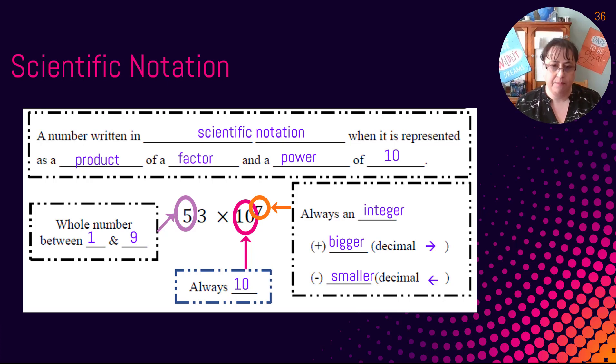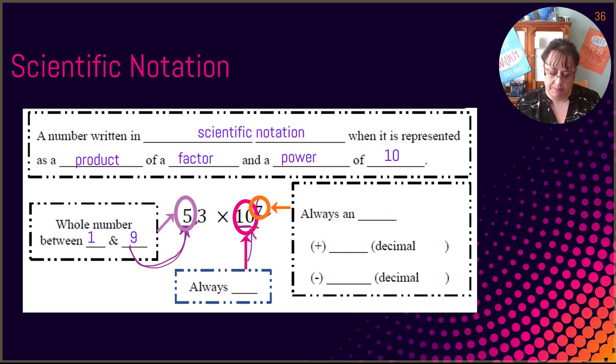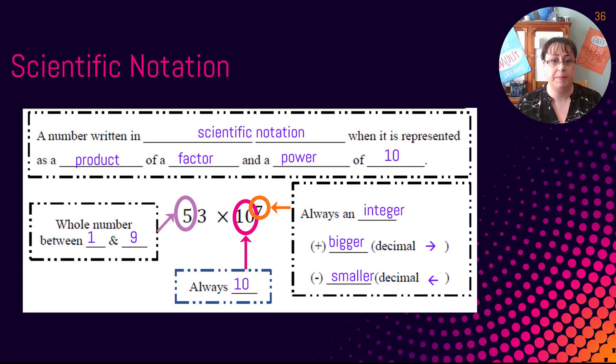And then this part right here, it is always going to be 10. And the exponent will always be an integer. If it is a big number, it is always going to be moving the decimal to the left. And if it is a small number, it is always going to be moving the decimal to the right.